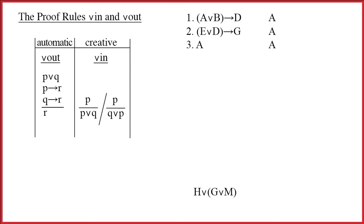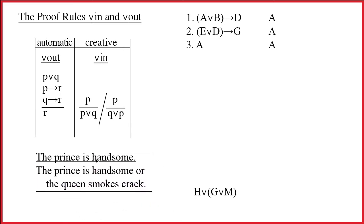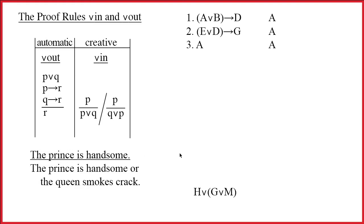Now I know this looks a little strange. Let's see just how strange it is. Here's an example in English, my favorite sort of silly example. Our premise, the P part, is that the prince is handsome. Alright, if that's true then it follows that either the prince is handsome or that the queen smokes crack.